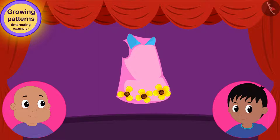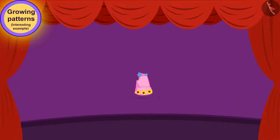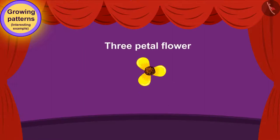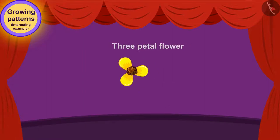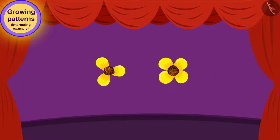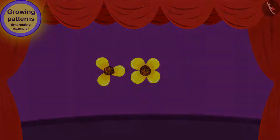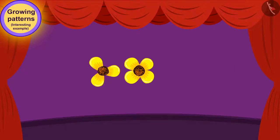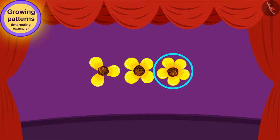Here, Bablu liked the unique growing pattern of flowers in the dress. The pattern began with a three petal flower. Then a four petal flower was added to it. In this way, every time one more petal flower is being added to it.